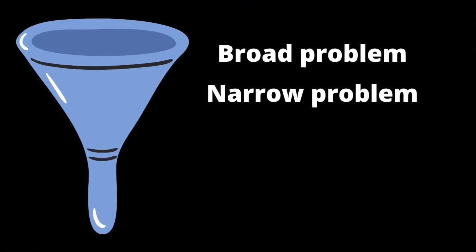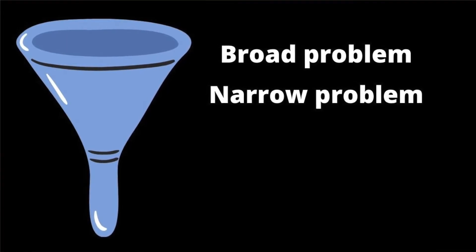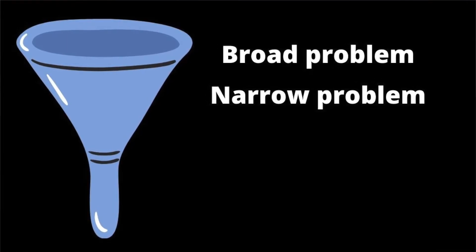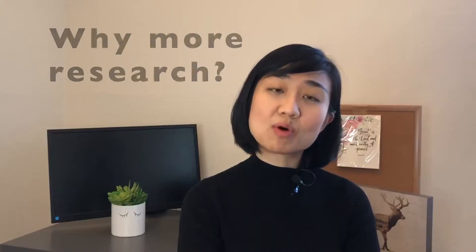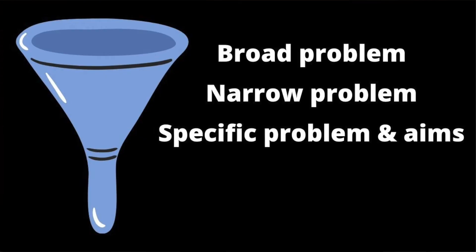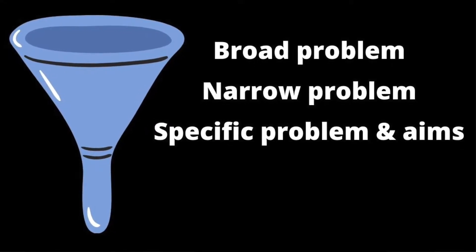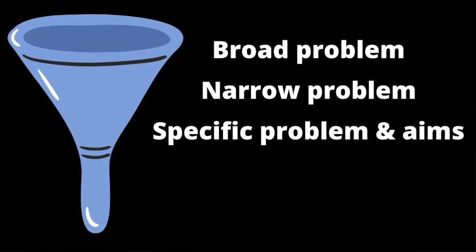In paragraph two, you are doing the same but narrowing down what has been done, what is the deeper problem, and why more research has to be done. In paragraph three, you describe the specific problem and describe your research aims.